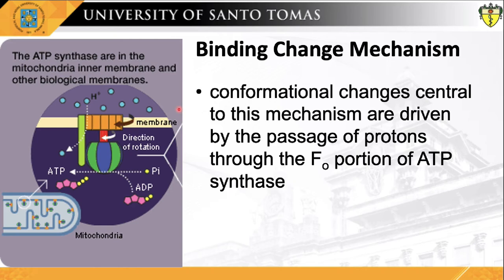The conformational changes central to this mechanism are driven by the passage of protons through the FO portion of ATP synthase. This, in turn, turns the FO portion of ATP synthase, leading to conformational changes in the beta subunits of the F1 headpiece of the enzyme complex, resulting in the phosphorylation of ADP to ATP.